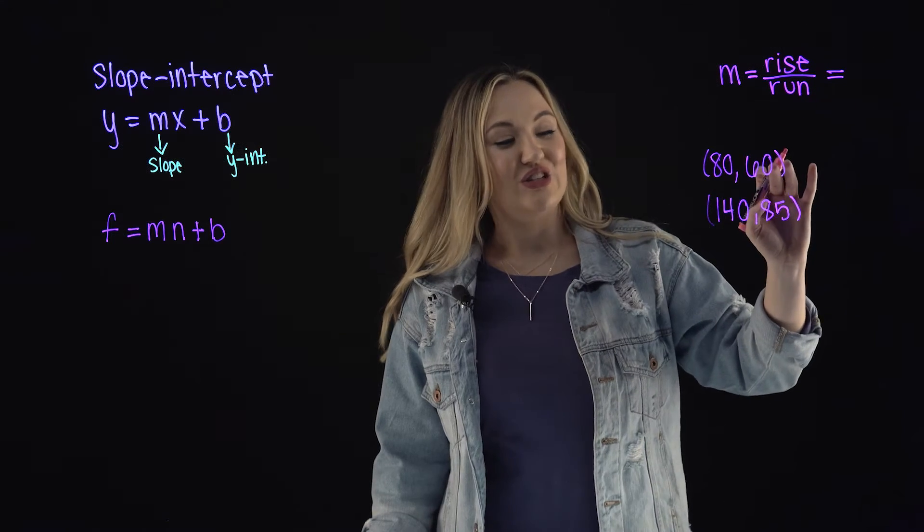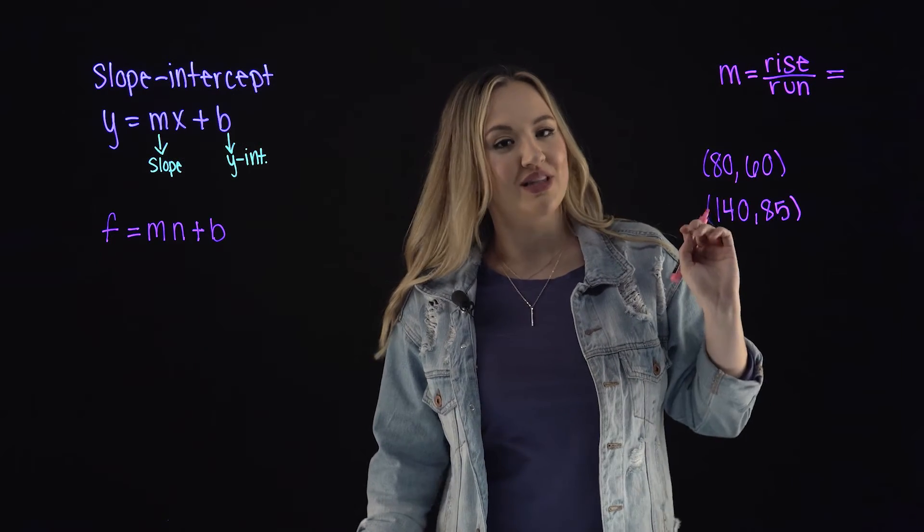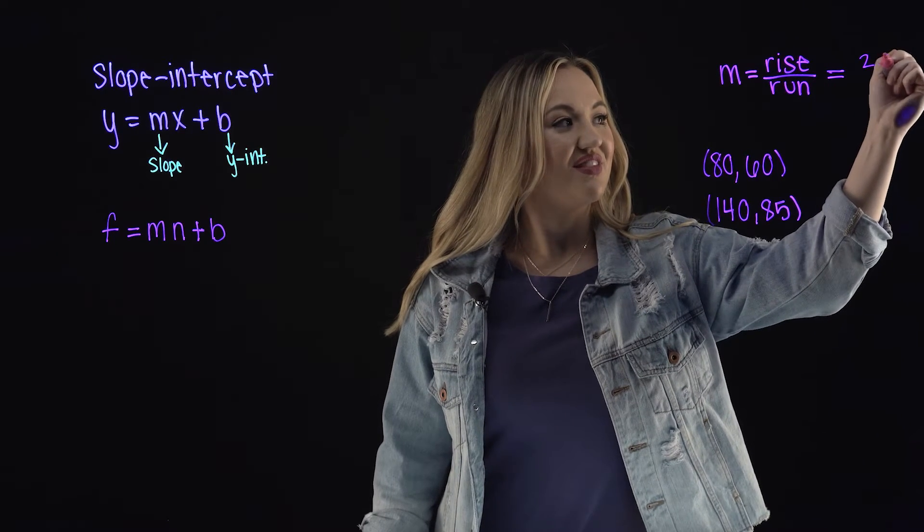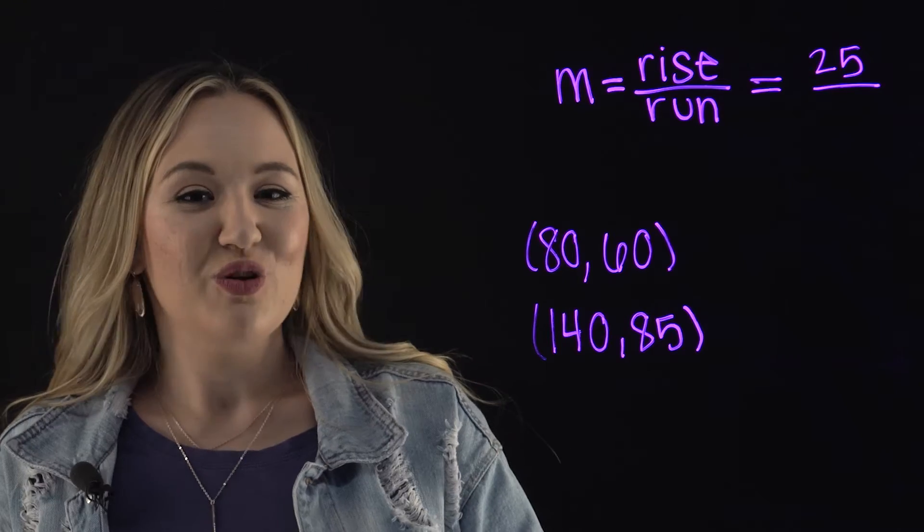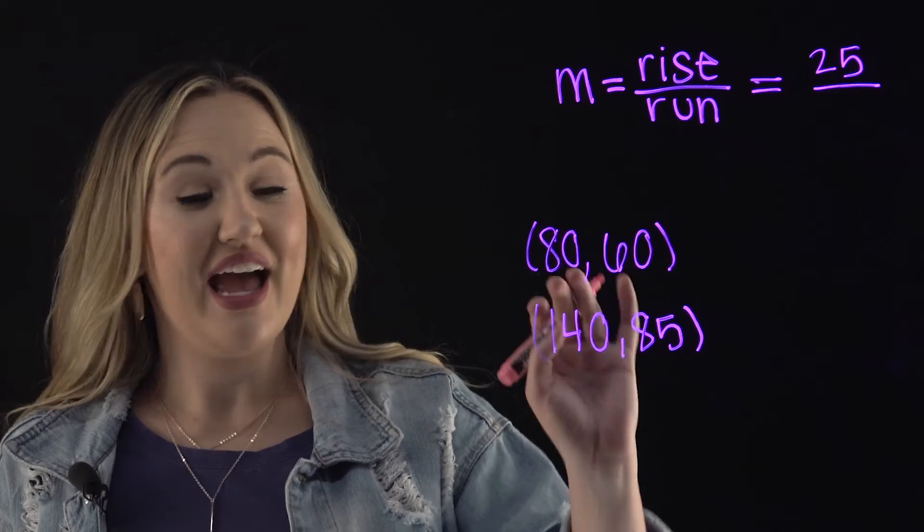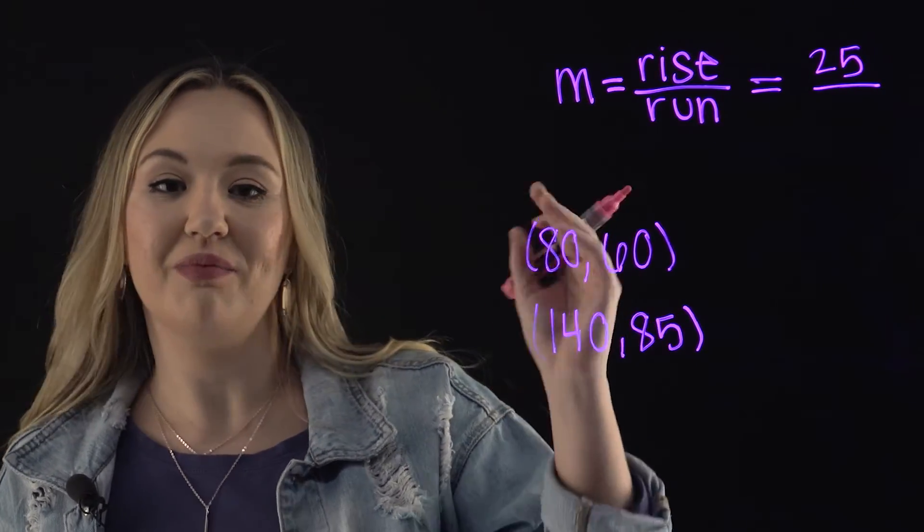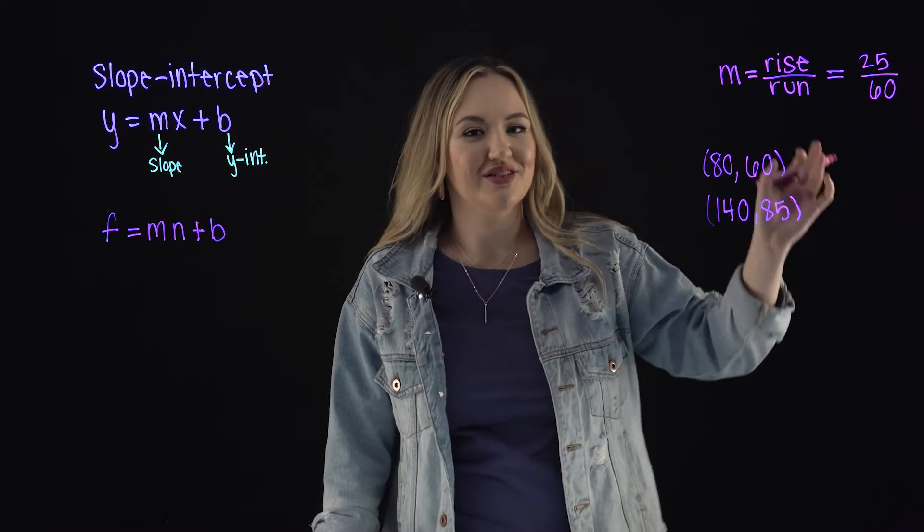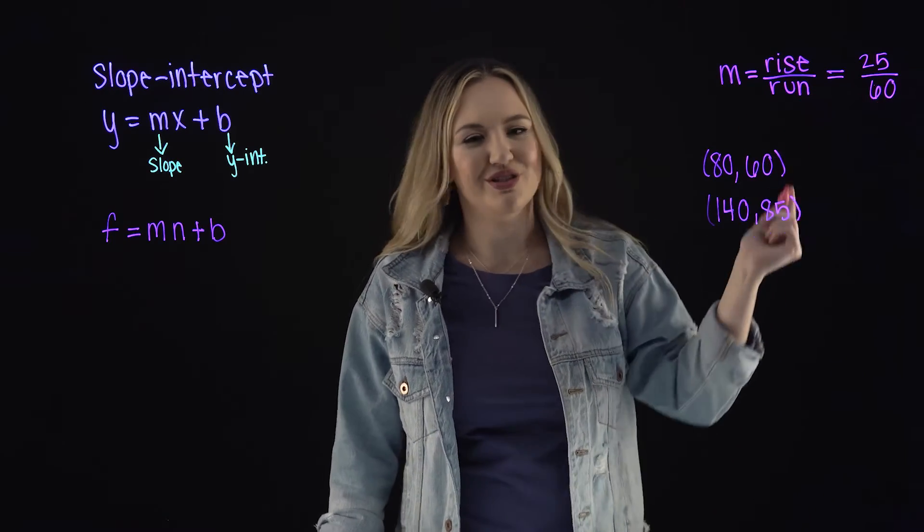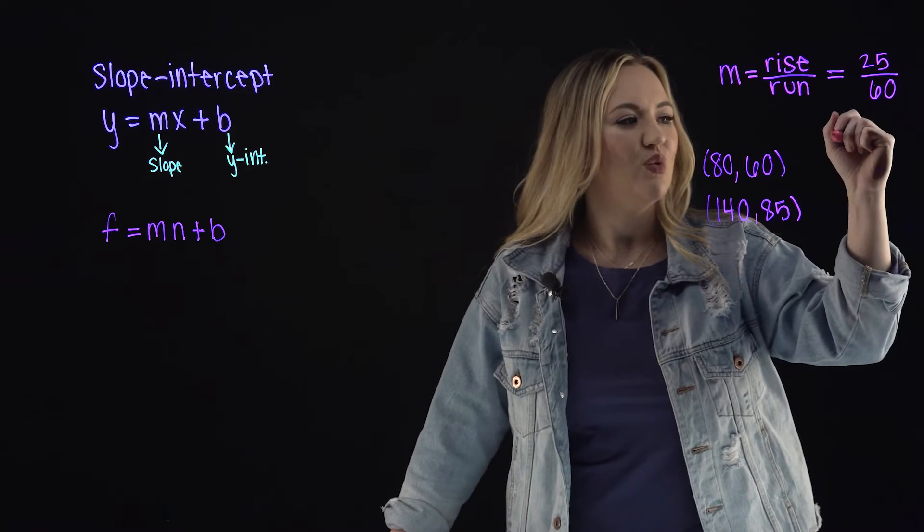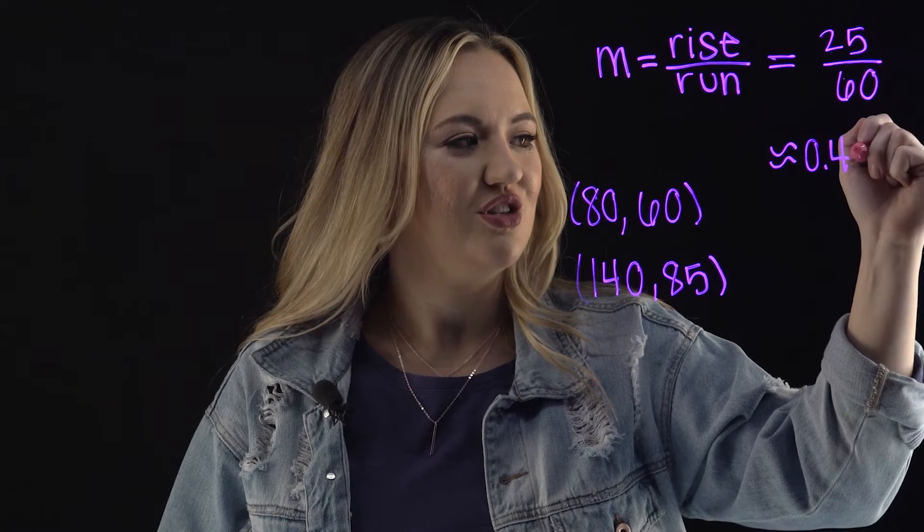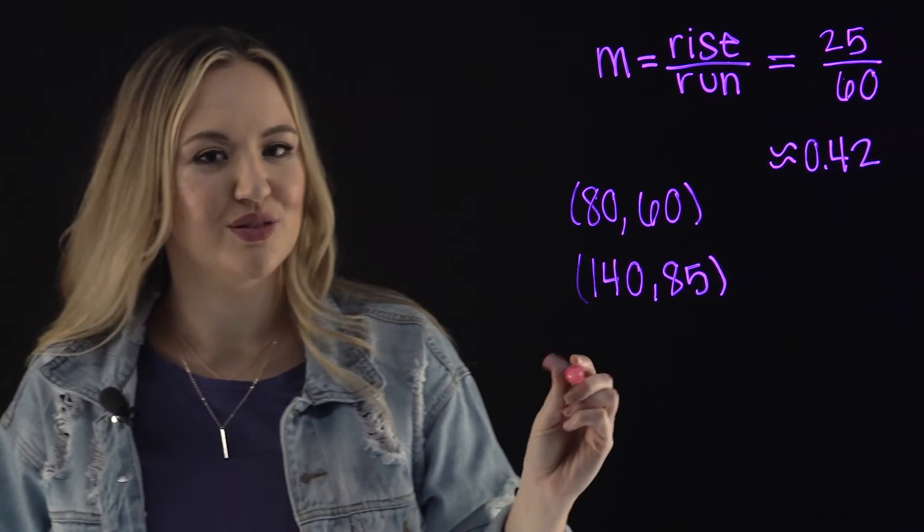So our rise is our change in our y values, or in this case our F values, which is 25. And our run is our change in our x values, or in this case our n values, so 140 minus 80, which is 60. That means that our slope is equal to 25/60, or simplifying that, we get approximately 0.42.